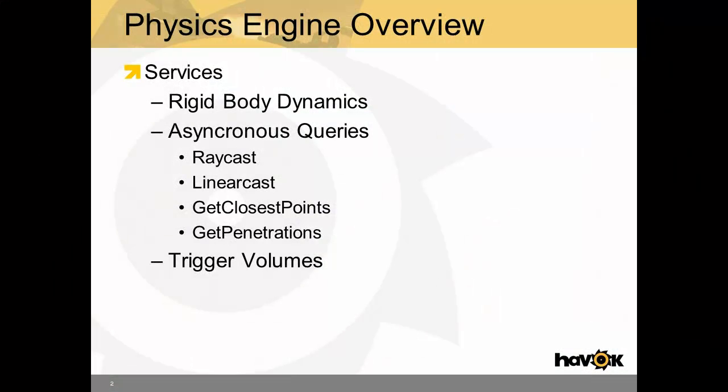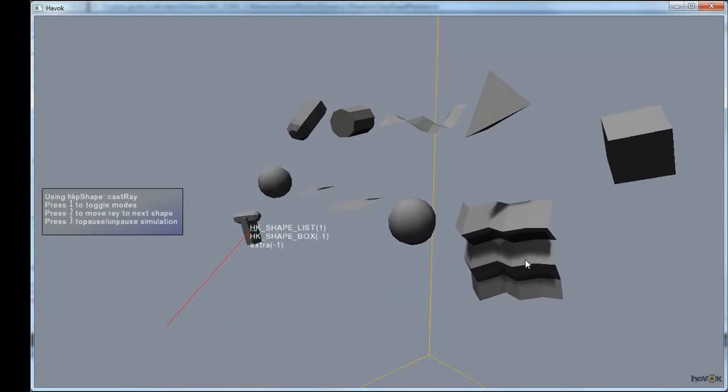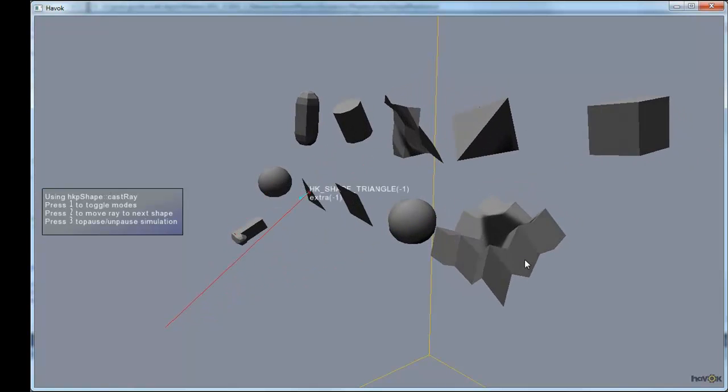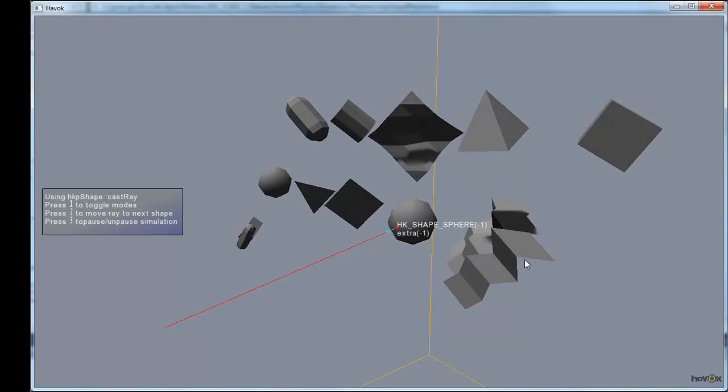Asynchronous queries is another service that is often provided. This is simply a way for the game to gather data about the physical world outside of the dynamic step. This is things like ray casts. So if I fire a ray through the world, what do I hit? This is very useful for things like line of sight checks. So can my enemy see the player, for instance?